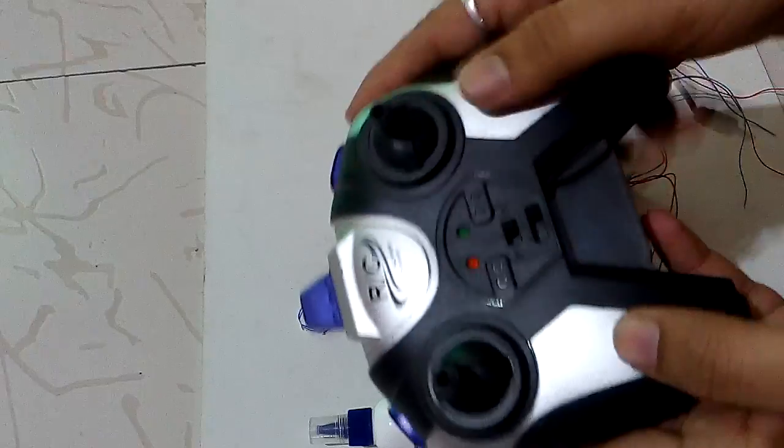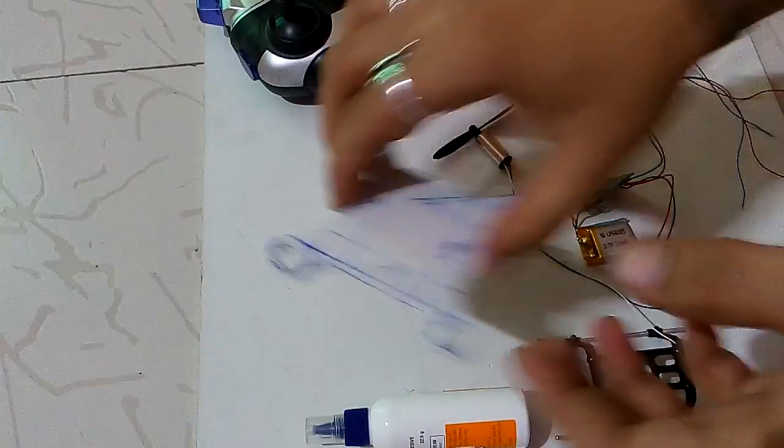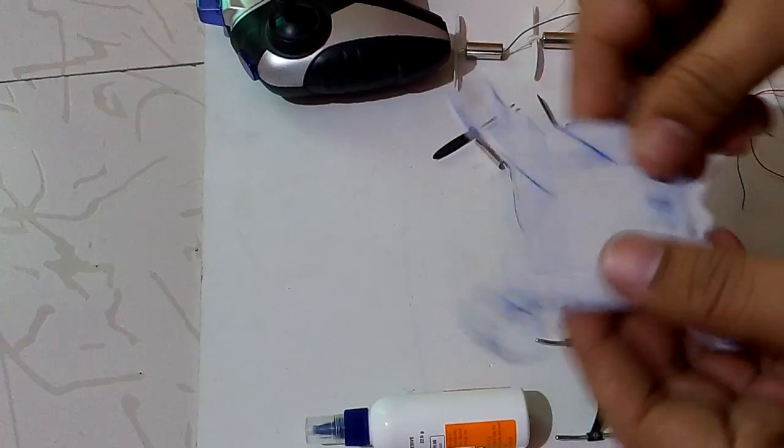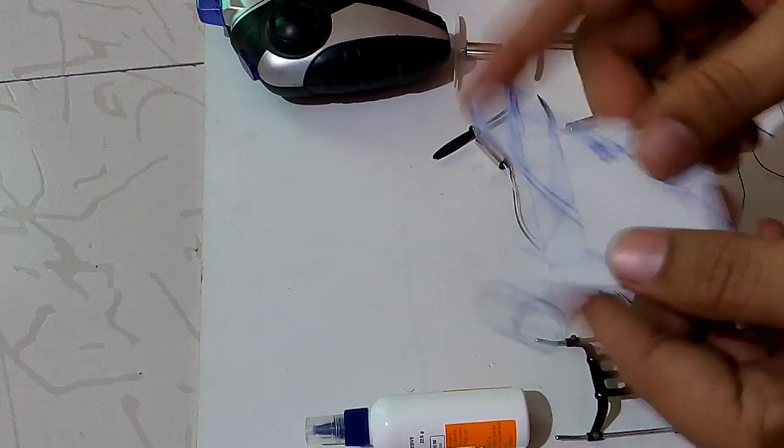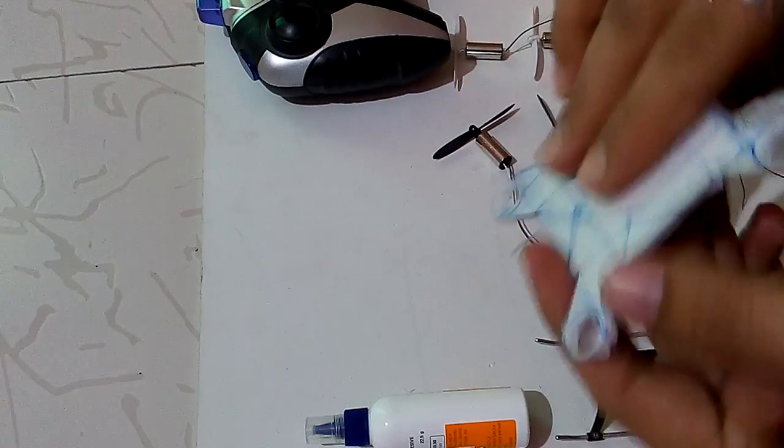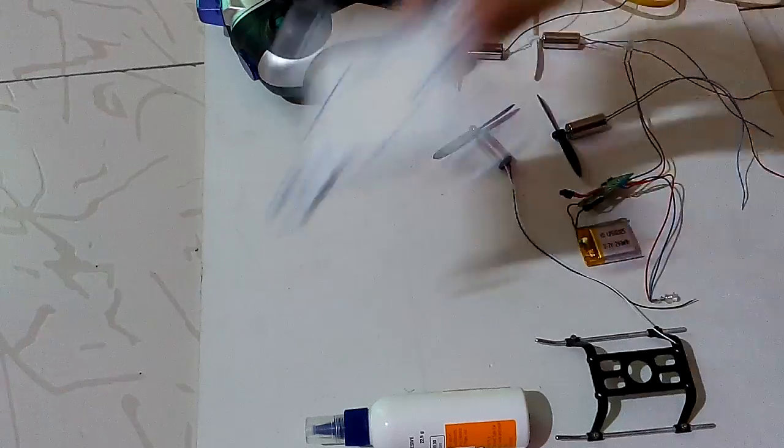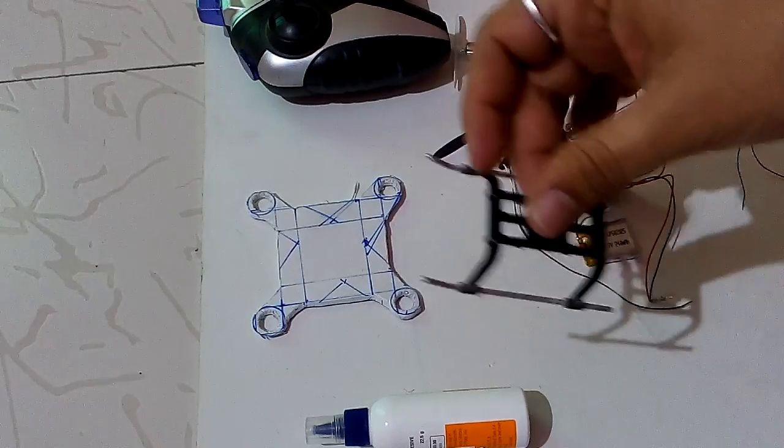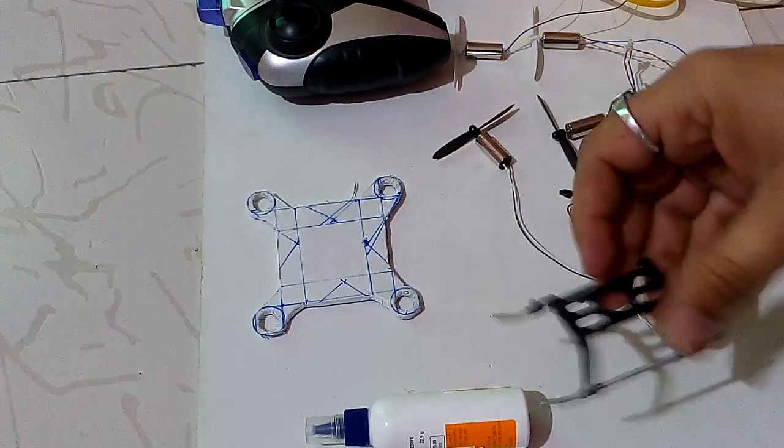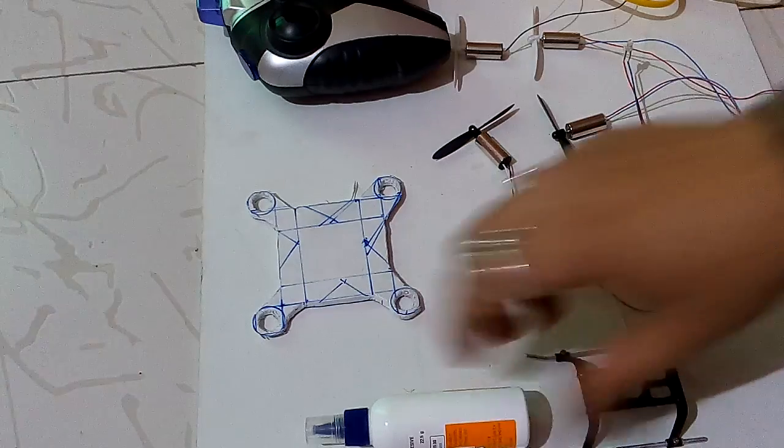I have created one chassis using a whiteboard. You can use whiteboard or cardboard for creating the chassis. This is a stand. You can create your own stand using jumper wire.